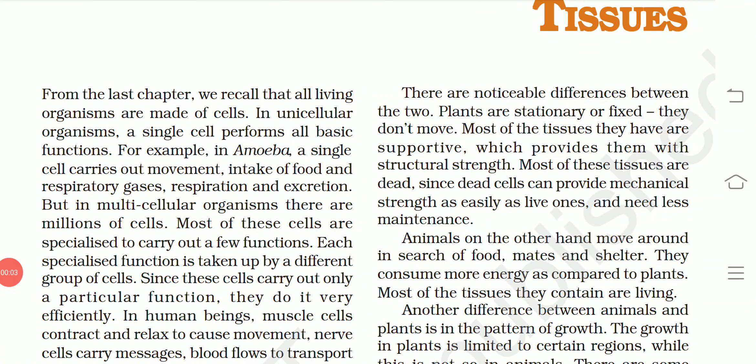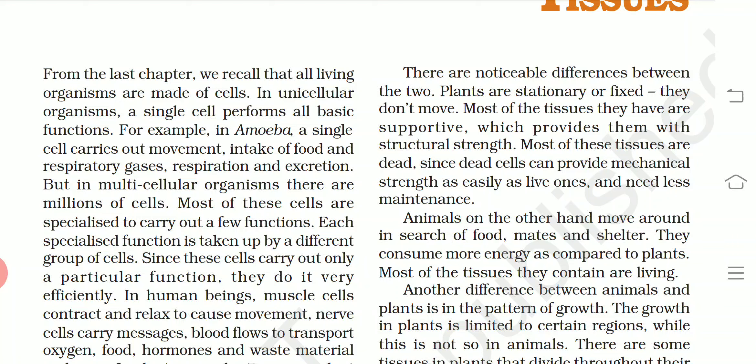Hello everyone, this is the sixth chapter of our science subject and the lesson is tissue. Last chapter we recalled that all living organisms are made of cells. Some are made of unicellular cells — for example, amoeba is a single cell. That single cell carries out all movement, food intake, and respiratory processes like inhaling and exhaling. But in multicellular organisms, there are millions of cells.